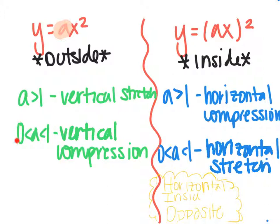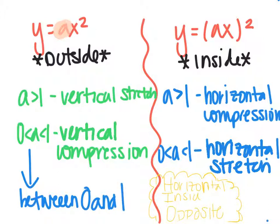If 0 is less than a, which is less than 1, which simply means that a is between 0 and 1, for example 0.5 or 0.7, then it is going to be a vertical compression.